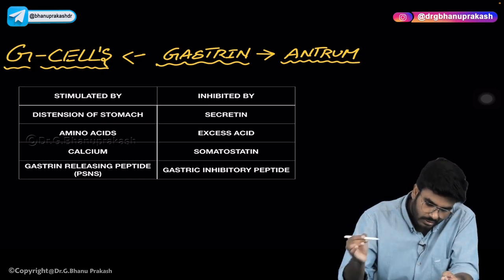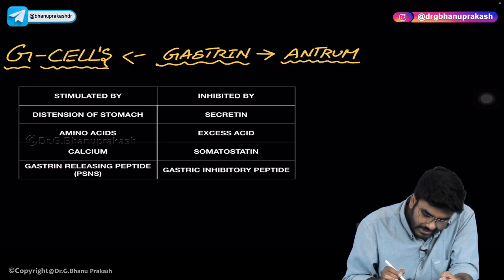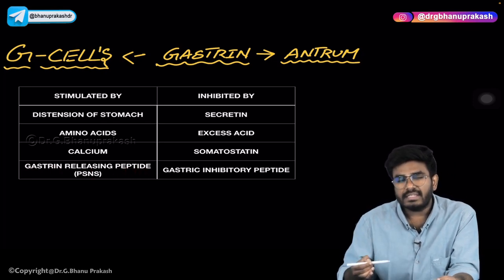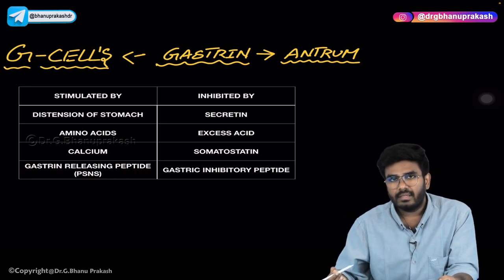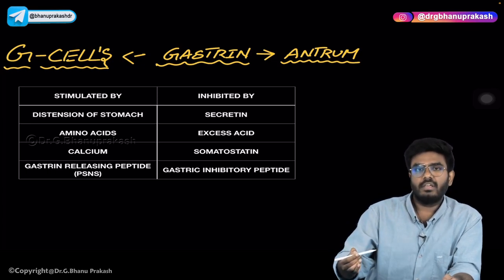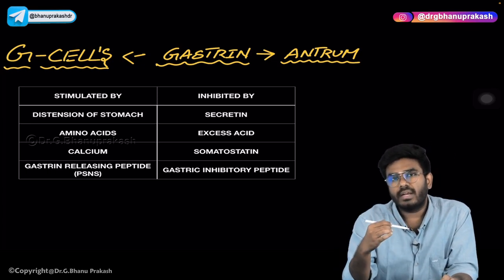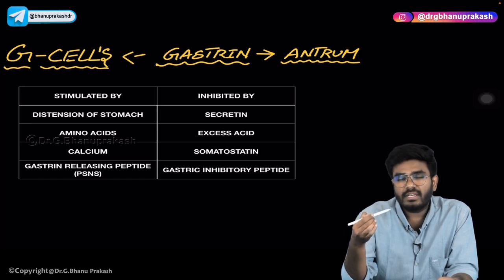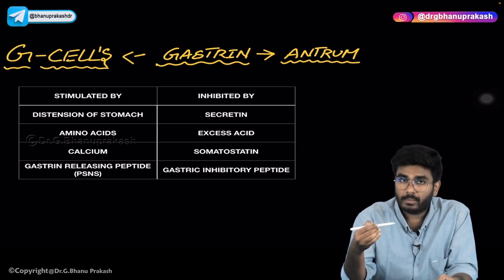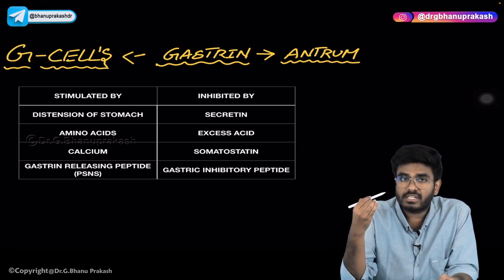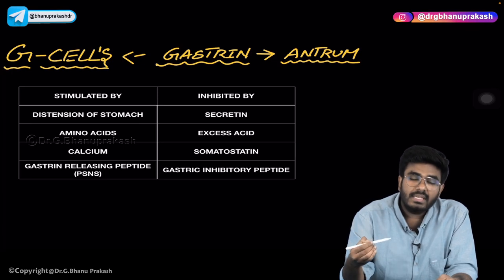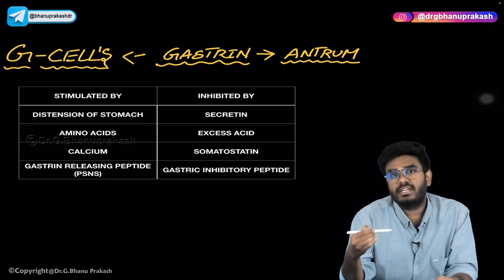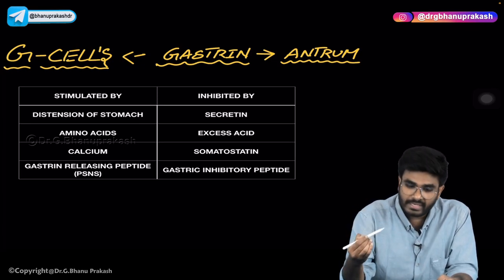Additionally, gastrin releasing peptide — as the name implies — helps in the release of gastrin. So the four conditions where gastrin production is increased are: distension of the stomach, amino acids, calcium, and gastrin releasing peptide.